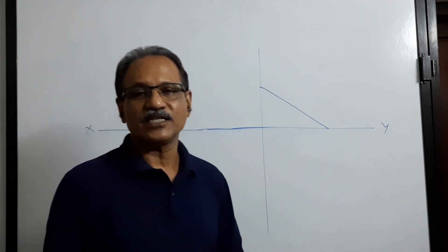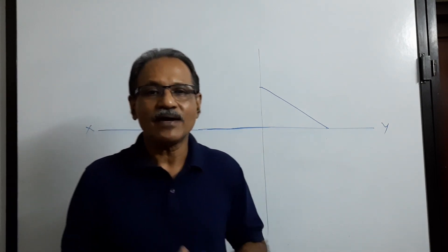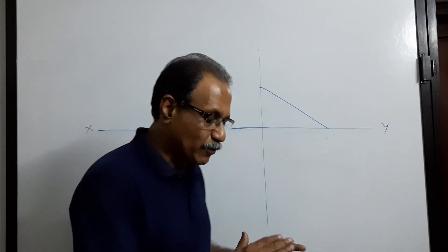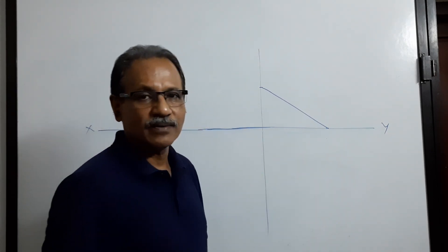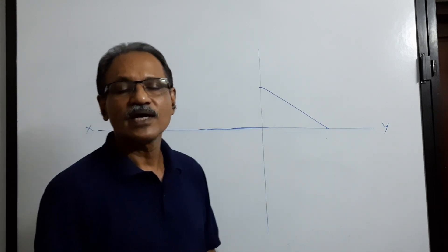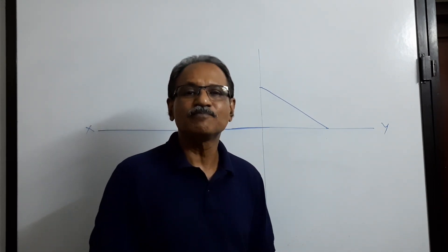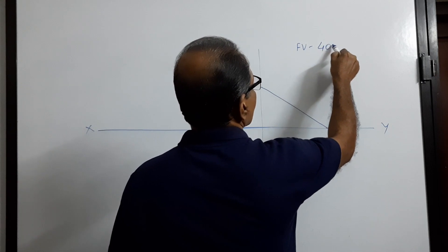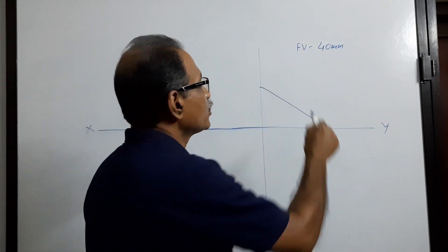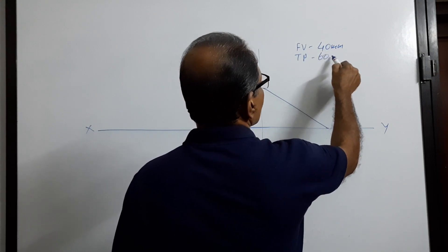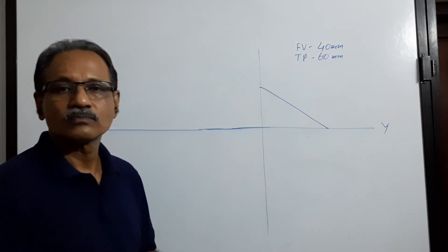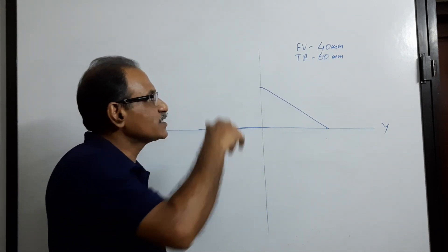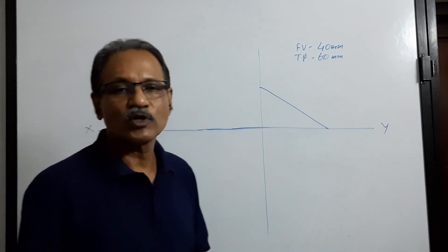This is an interesting question from projection of planes. A circular lamina rests on a point on HP with the diametrically opposite point on VP — that is, leaning on to VP — in such a way that the front view is an ellipse of 40 mm minor axis and the top view is an ellipse of 60 mm minor axis.